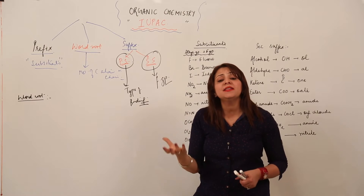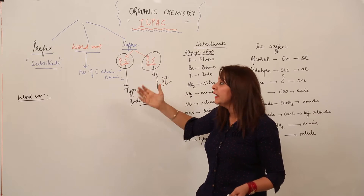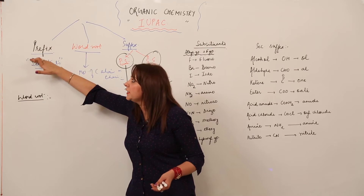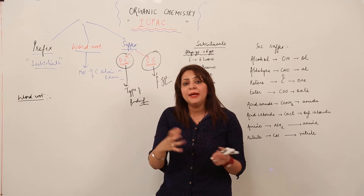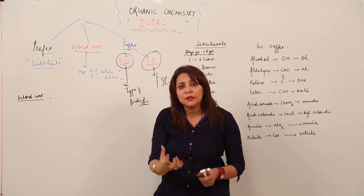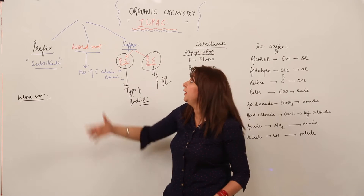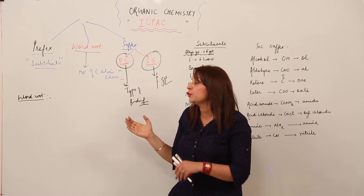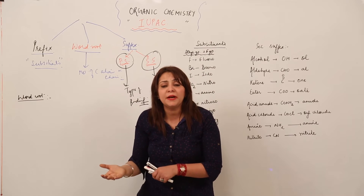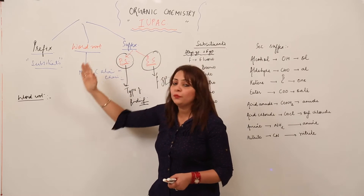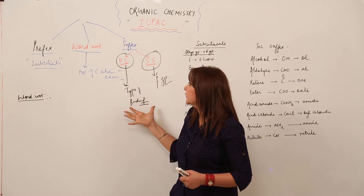A functional group is a group of atoms which determines the properties of the compound. So, to summarize: the name is divided into three parts — prefix, word root, and suffix. When naming an organic compound, we write the prefix first, then count the carbon atoms to form the word root, and finally add the suffix indicating the type of bond. If a functional group is present, a secondary suffix is attached to the primary suffix.